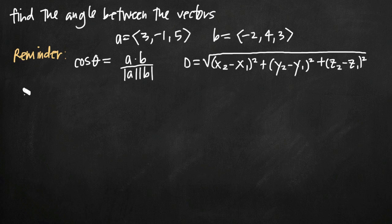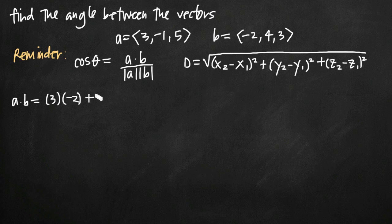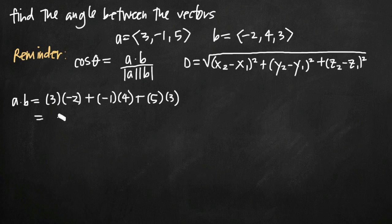Finding the dot product is just as simple as multiplying each of the components of a and b and adding those products together. So the dot product of a and b equals: multiply the x values together, giving three times negative two; add to that the y components, negative one and positive four; then add the z components, five and three. Simplifying, we get negative six minus four plus fifteen, which gives us positive five. So our dot product is five.